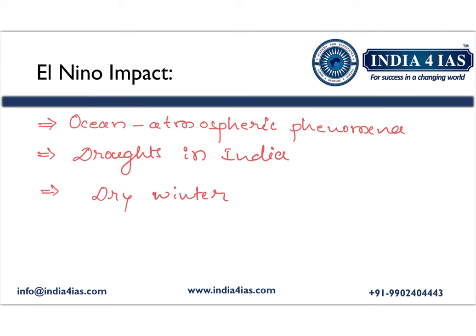El Niño is an ocean-atmospheric phenomenon that affects global atmospheric circulation and is one of the potential contributors to droughts in India. This year, El Niño has been persisting for the last few months, making it one of the reasons for dry winter in Jammu and Kashmir.